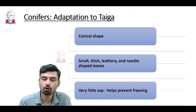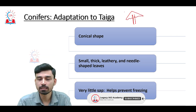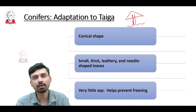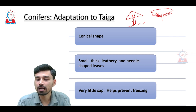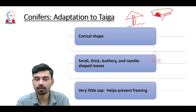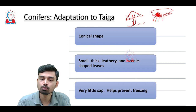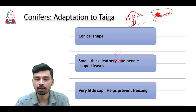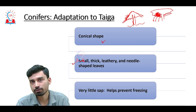Coniferous trees are best suited for this climatic region for several reasons. First, they have a conical shape, which helps them survive continuous snowfall. If normally shaped deciduous trees were present, branches would extend outward and snow would accumulate heavily on branches and leaves. The weight of accumulated snow could cause deciduous tree branches to snap and break. However, due to the conical shape of conifers, snow cannot accumulate and simply slides down to the ground, preserving the tree's physical structure.